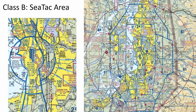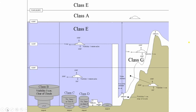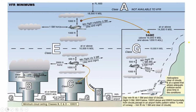Here's a quick summary look at Class Charlie, Class Delta, Class Echo, Golf, and Alpha together for reference.